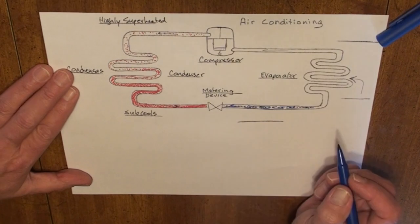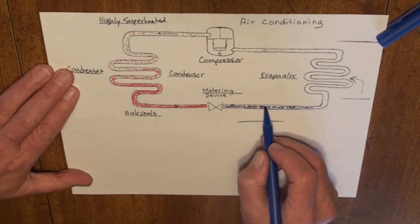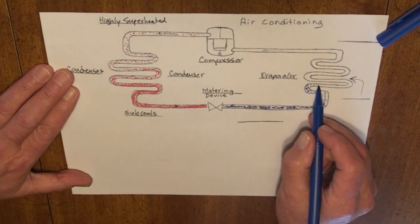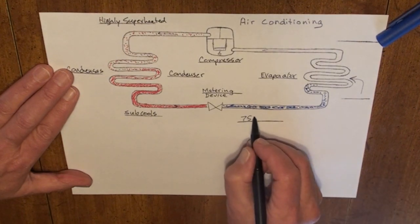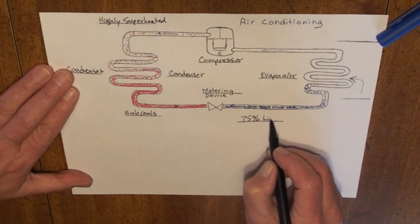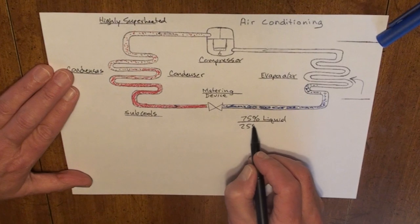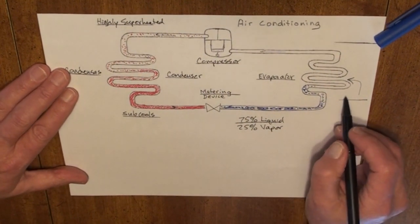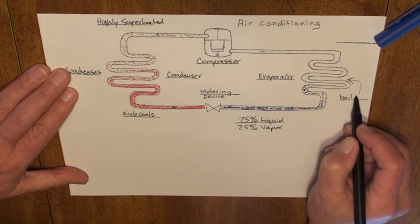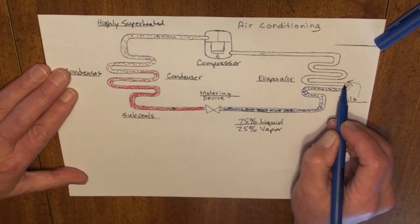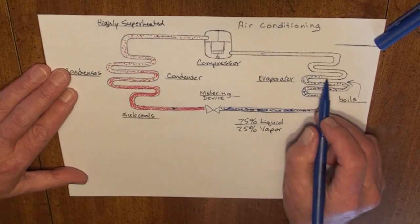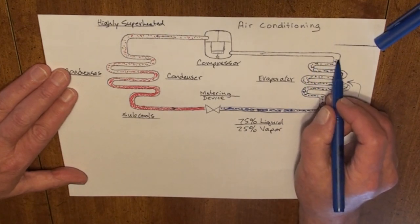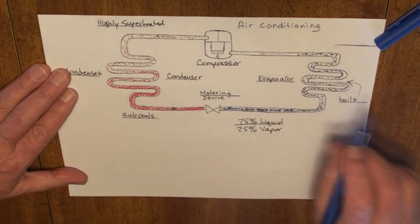It leaves the metering device as a 75% liquid and a 25% vapor. It enters the evaporator where it continues to boil, absorbing latent heat all along the way. It leaves the evaporator as a 100% vapor, a superheated vapor.